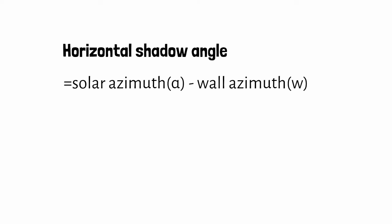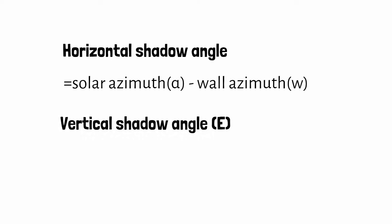Horizontal shadow angle is the difference between the solar azimuth and the wall azimuth. Vertical shadow angle is used to calculate the horizontal shading device.